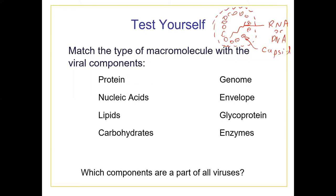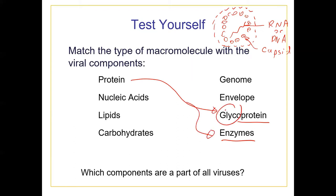Sometimes viruses have something around them called an envelope - a membrane taken when they escaped from a host cell, containing glycoproteins. This is a matching question. Glycoprotein goes with carbohydrate - glyco means carbohydrate. The genome is made out of nucleic acids, and the envelope is made out of phospholipids. Which components are part of all viruses? All viruses have a genome - nucleic acids - and all viruses have a capsid. Some viruses have glycoproteins and lipids; some don't.